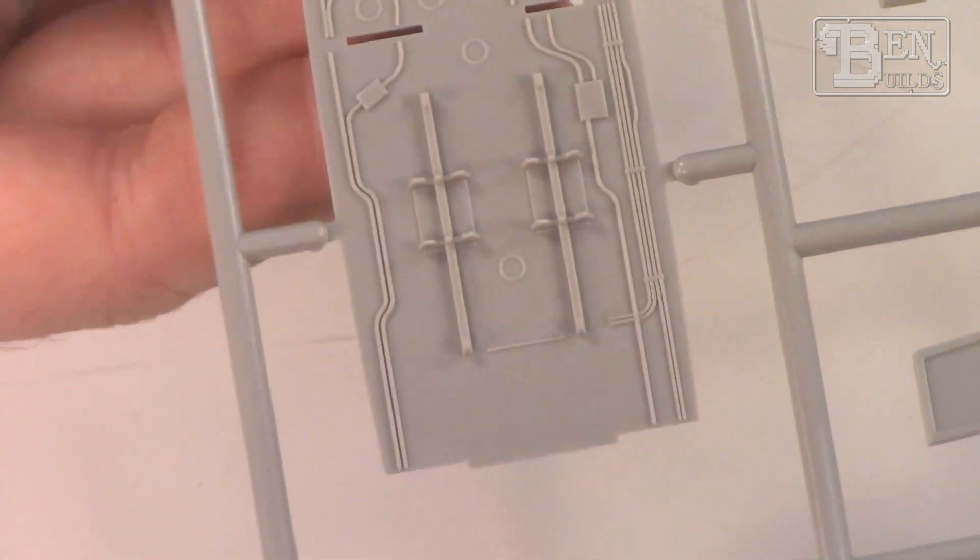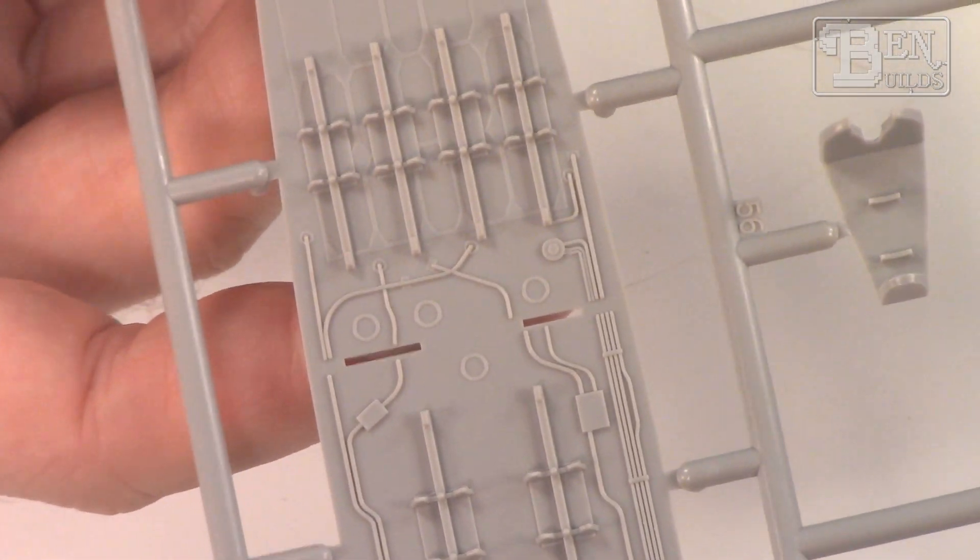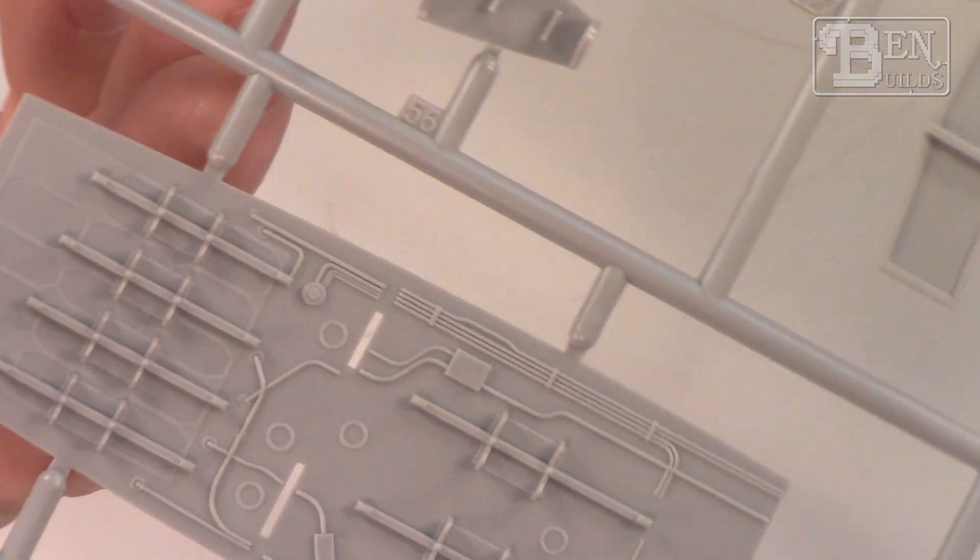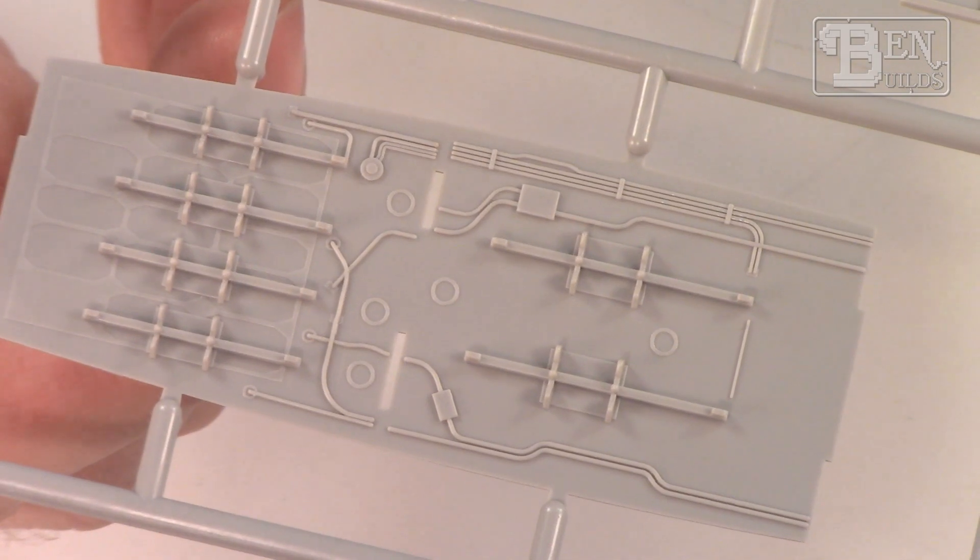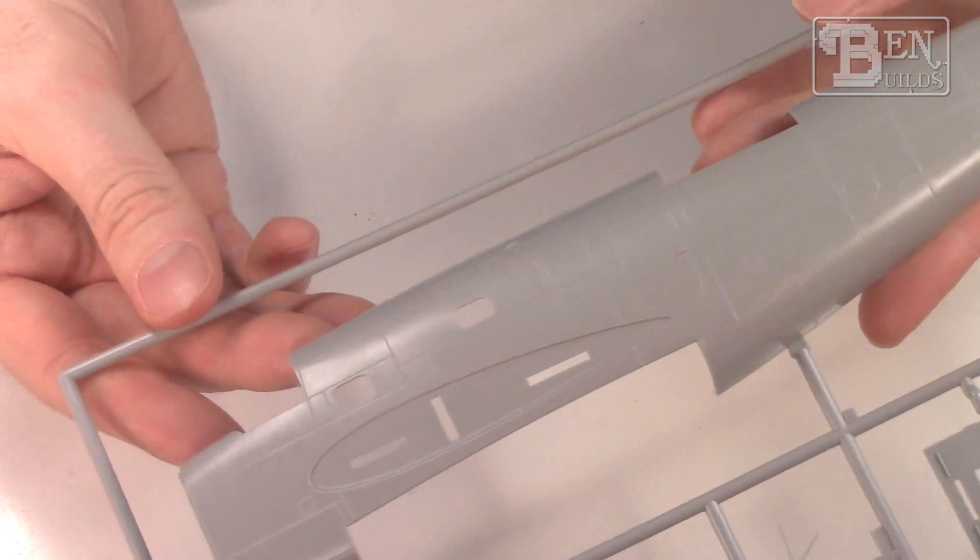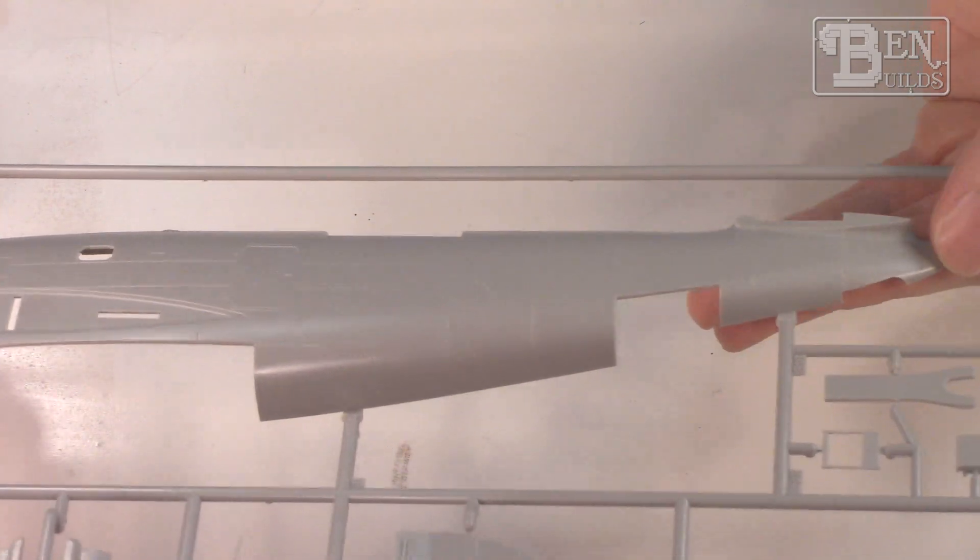Here's the close-up of the bomb bay. You can see all the different cradles for the bombs. We do have some wiring in there. It's probably a lot more spartan than it needs to be but honestly should be fine. The fuselage is beautiful. The recessed panel lines aren't trenches, they're nice and subtle. I honestly think this is a really cool looking aircraft.